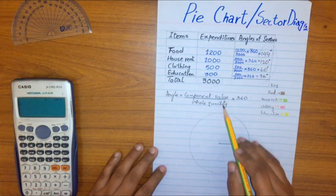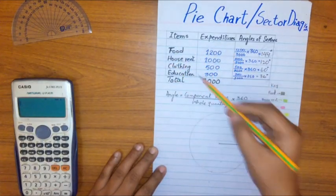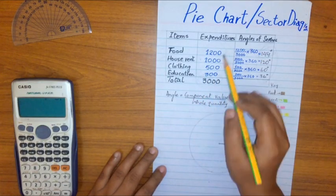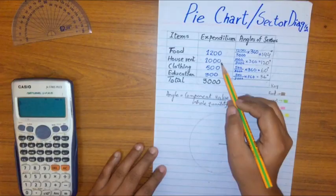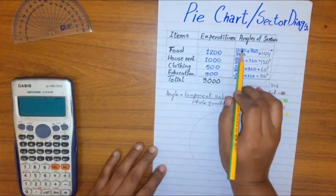Now for the slices of pie chart or subdivisions or sectors, we compute our angles which equals component value divided by whole quantity multiplied by 360. These are all our components and these are its values, and here is the whole quantity. So we substitute all these values in the given formula.